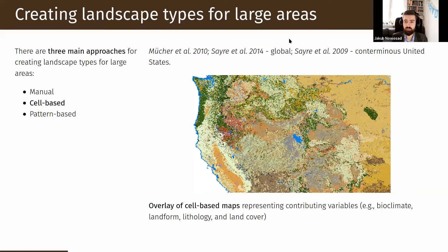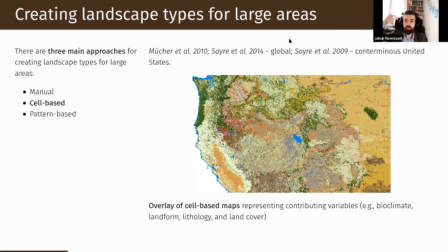Another approach, probably the most popular currently, is what I call the cell-based approach. In the cell-based approach we gather several datasets like landform, land cover, and several others, and we look at each cell and create an overlay. For example, one cell is a forest on top of a mountain with some type of climate, and you can see one of the possible results on the screen.